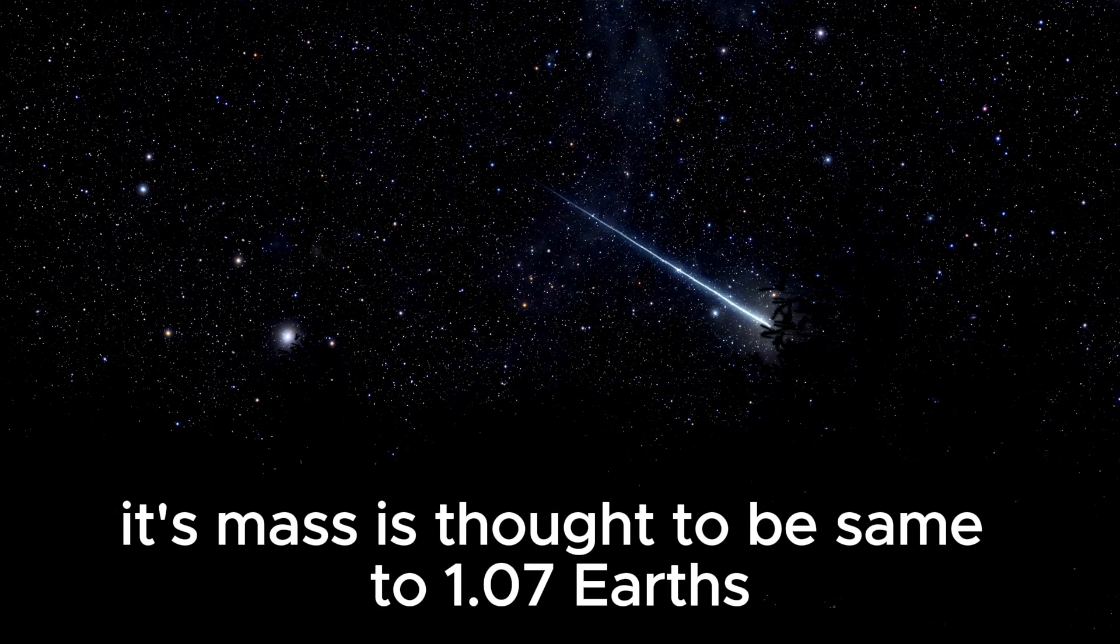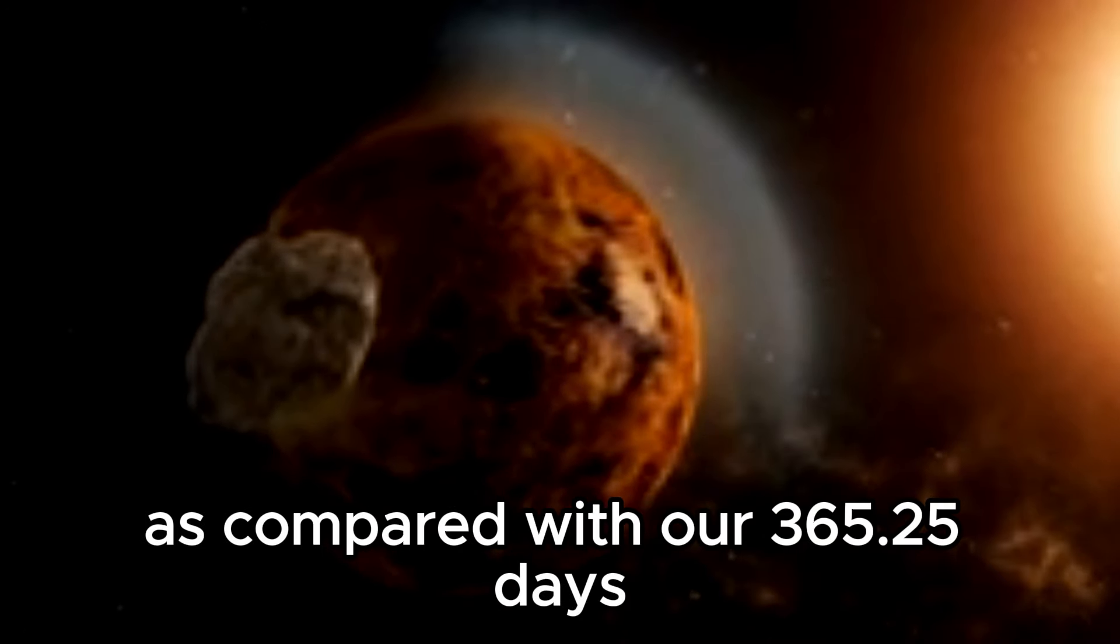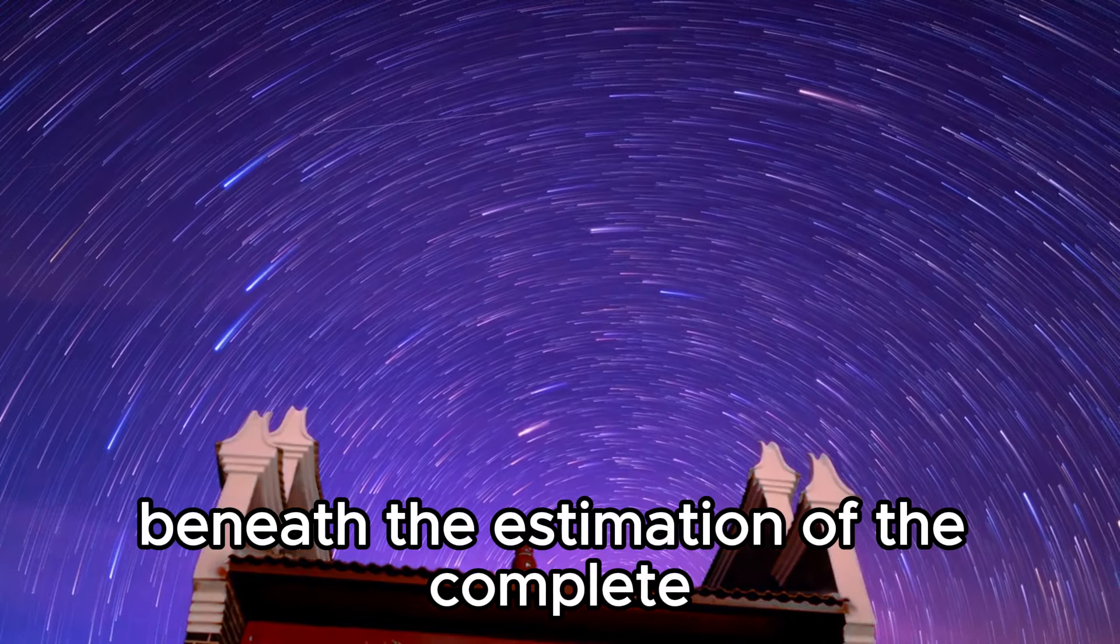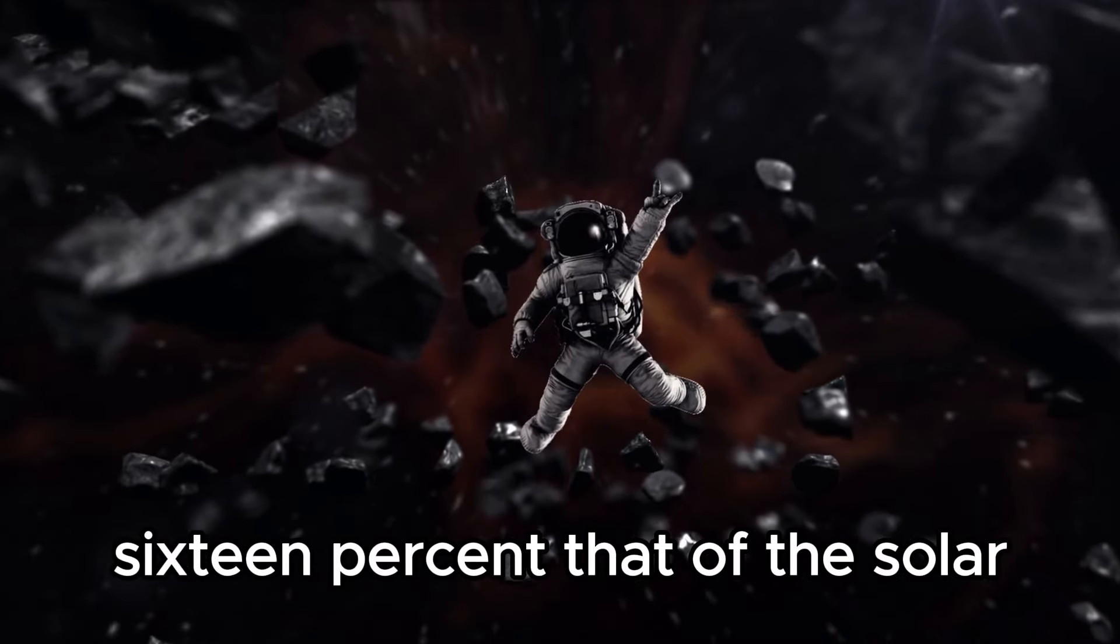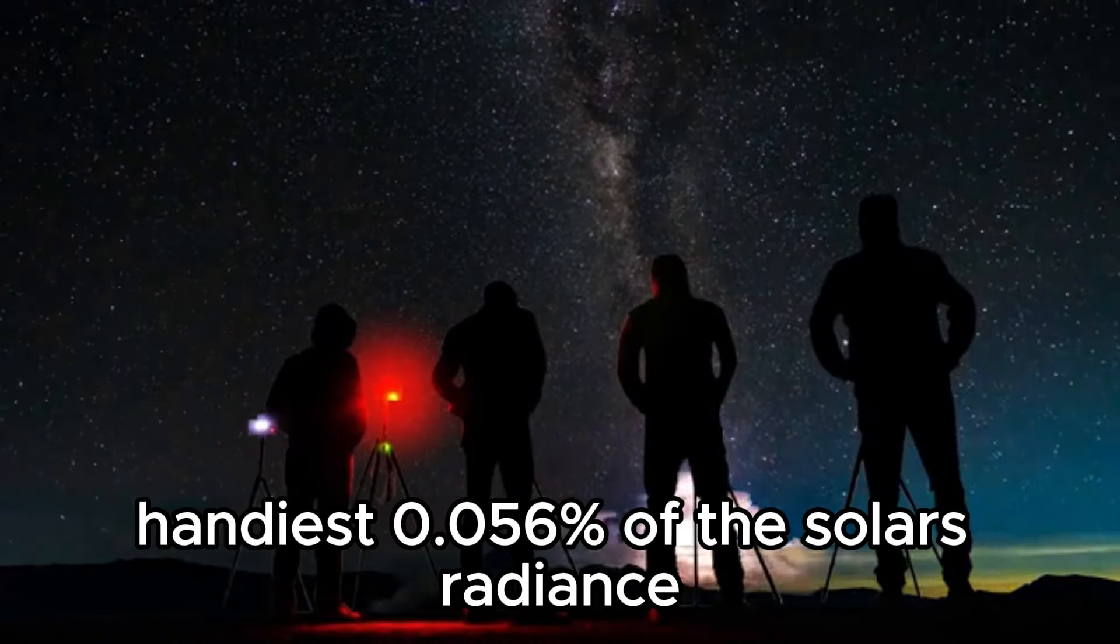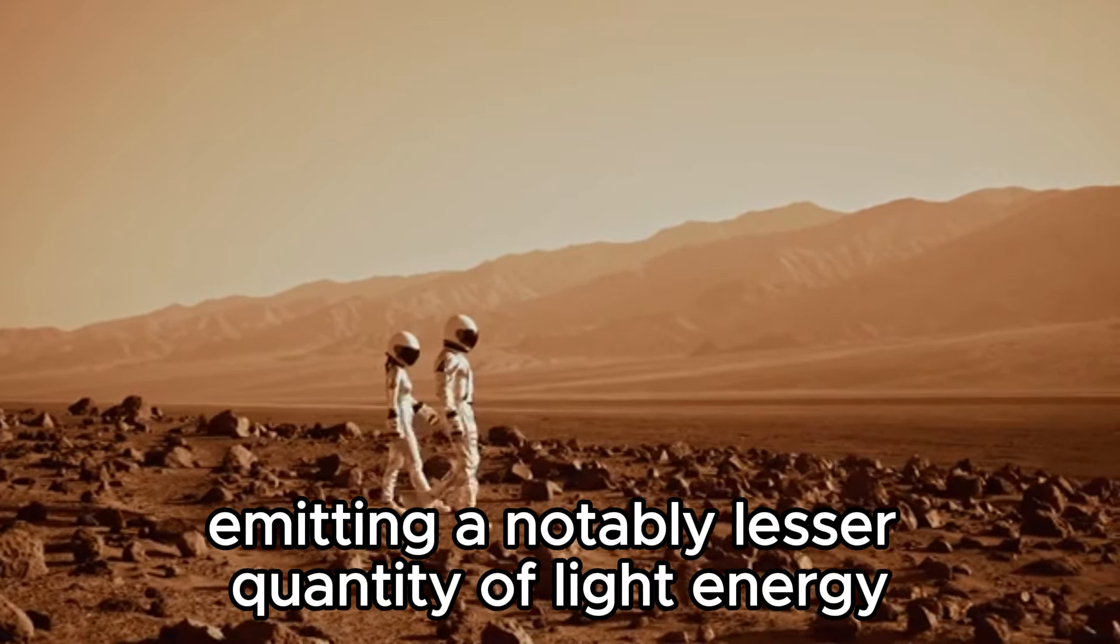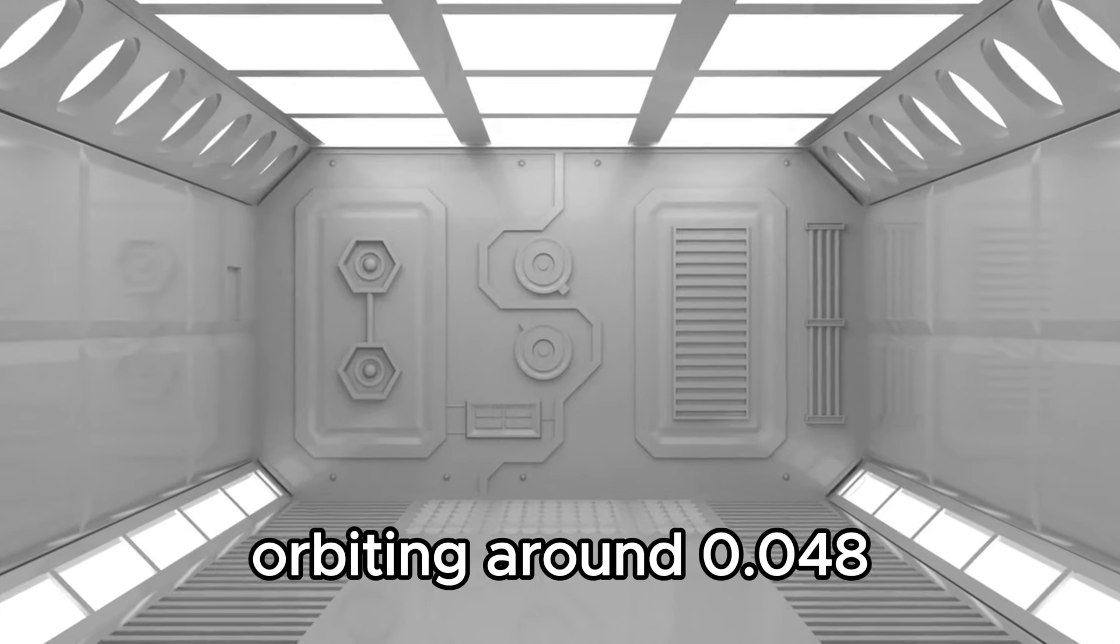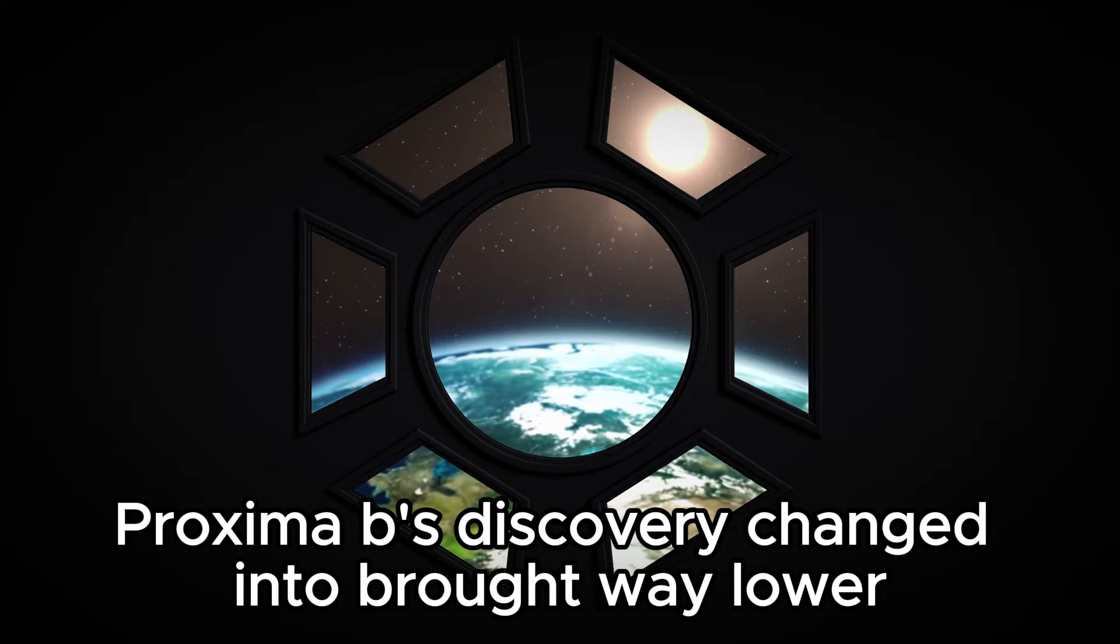Returning to Proxima B, its mass is thought to be equal to 1.07 Earths. It only takes 11.2 days to complete one orbit of its star, compared with our 365.25 days. You can gauge the size of the star Proxima B is orbiting by the estimation of the complete electromagnetic spectrum. The star has a total radiance of just around 0.16% that of the sun. Additionally, in the visible light spectrum, its radiance appears much dimmer as it illuminates only 0.056% of the sun's radiance in visible light, emitting a significantly lesser amount of light energy compared to the sun. More than 85% of its emitted energy is in the form of infrared radiation. Orbiting around 0.04856 AU from its star, Proxima B's discovery was announced way back in 2016.